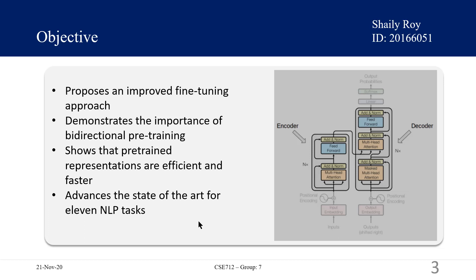The contributions of the paper are as follows. They demonstrate the importance of bidirectional pre-training for language representations, unlike Radford et al., which uses unidirectional language models for pre-training, but uses masked language models to enable pre-trained bidirectional representations. They show that pre-trained representations reduce the need for many heavily engineered task-specific architectures. BERT is the first fine-tuning-based representation model that achieves state-of-the-art performance on a large suite of sentence-level and token-level tasks, outperforming many task-specific architectures. BERT advances the state-of-the-art on 11 NLP tasks.